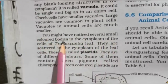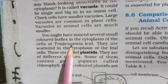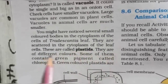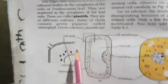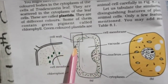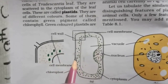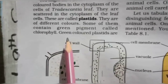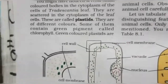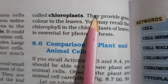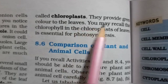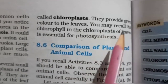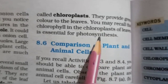You might notice several small colored bodies in the cytoplasm of the cells of Tradescantia leaf. They are scattered in the cytoplasm and are called plastids. They are of different colors. Some contain a green pigment called chlorophyll and are called chloroplasts. Chloroplasts provide green color to leaves and are essential for photosynthesis, a process we studied in the first chapter.